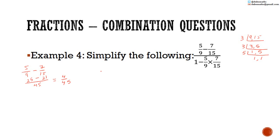Now we work out the denominator: 1 minus 5 ninths multiplied by 7 over 15. With BODMAS, we do multiplication before subtraction. 5 over 9 multiplied by 7 over 15: 5 into 5 is 1, 5 into 15 is 3. That can't reduce further. We have 1 minus 1 multiplied by 7 is 7, and 9 multiplied by 3 is 27.